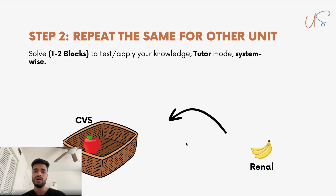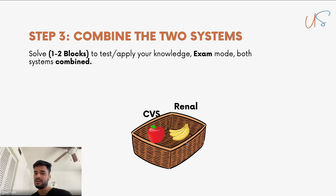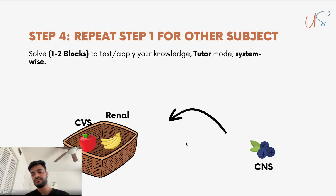Next, go to another unit and do the same thing. Let's take renal. Exactly the same: prime yourself with the knowledge, solve one to two blocks for renal on tutor mode, and apply your knowledge. When you're done, keep those two units in the basket and solve one to two blocks on exam mode of both systems combined — CVS and renal. You did CVS, you did renal, you're confident in both. Now test them together on exam mode, just one to two blocks.